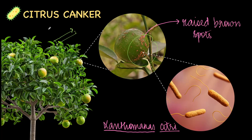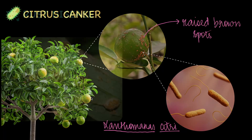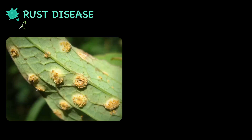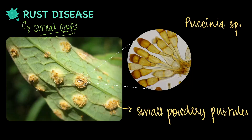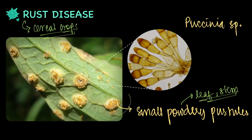Yet another plant disease is rust disease, which primarily affects cereal crops. Cereal crops like wheat, barley and oats are all affected by this disease. It is caused by a fungus called Paxenia, and there are various types of Paxenia species that cause stem rust, leaf rust or even yellow rust. This disease primarily produces small powdery pustules that you can see on your screen, which can sometimes be red, brown or yellowish depending on the rust type. These can appear on the leaf or on the stem, thereby weakening the whole plant.